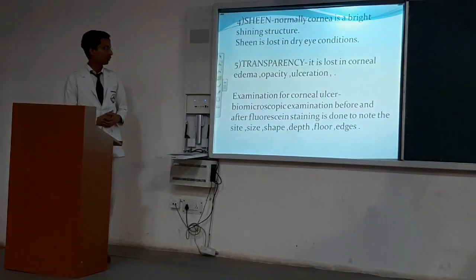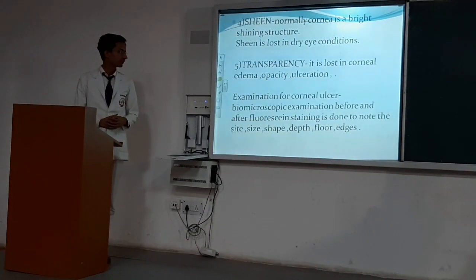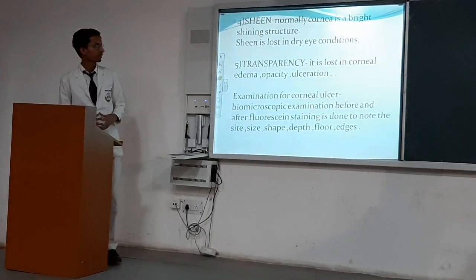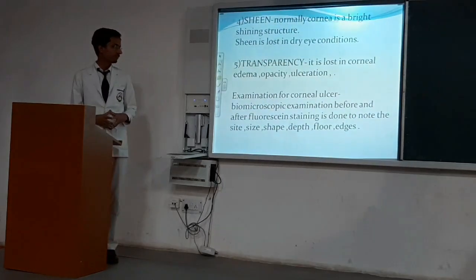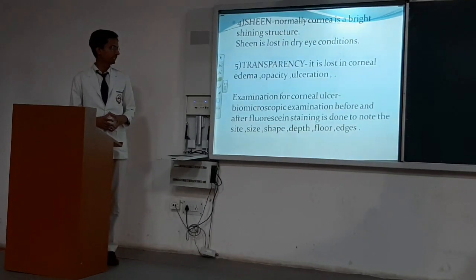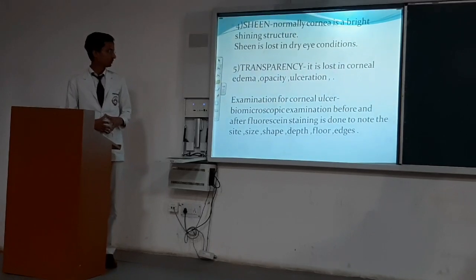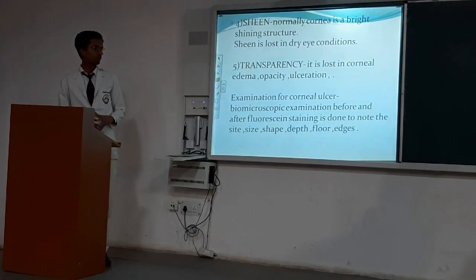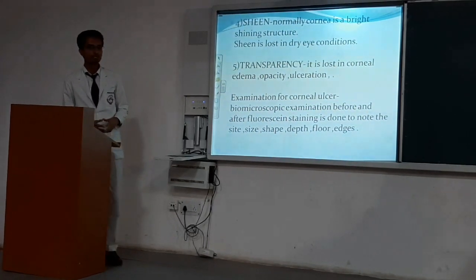Examination for corneal ulcer can be done by biomicroscopic examination, before and after fluorescein staining, to note the size, shape, depth, floor, and edges of the ulcer.